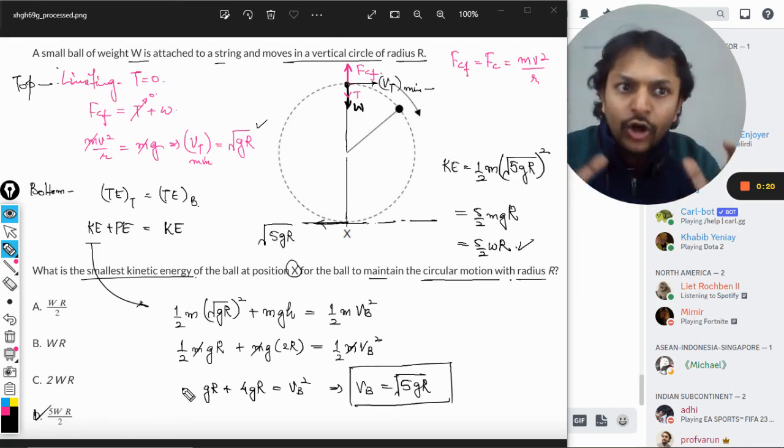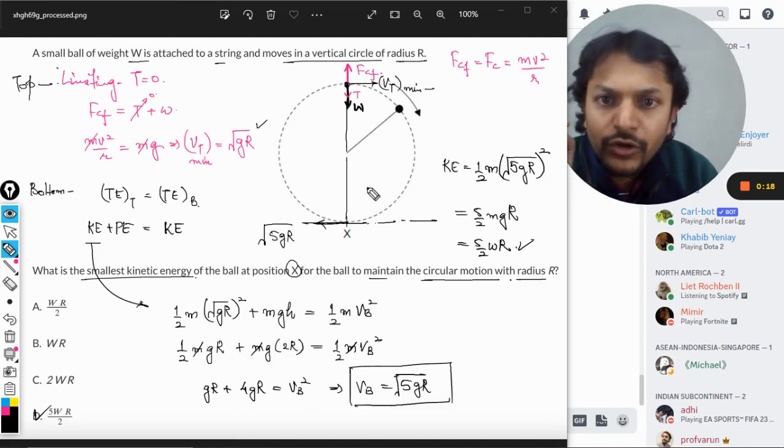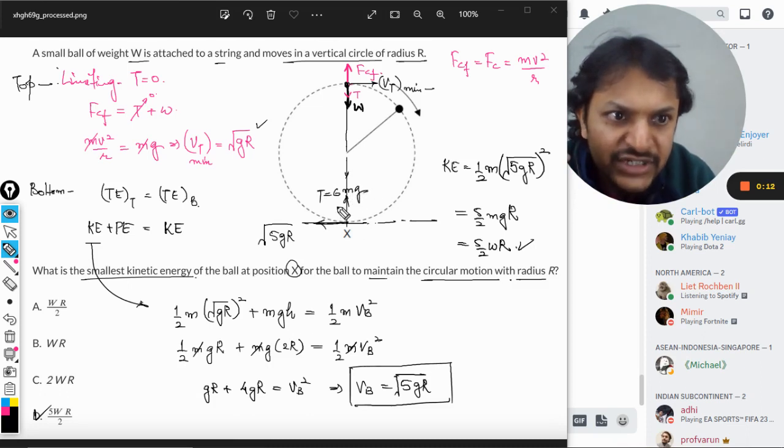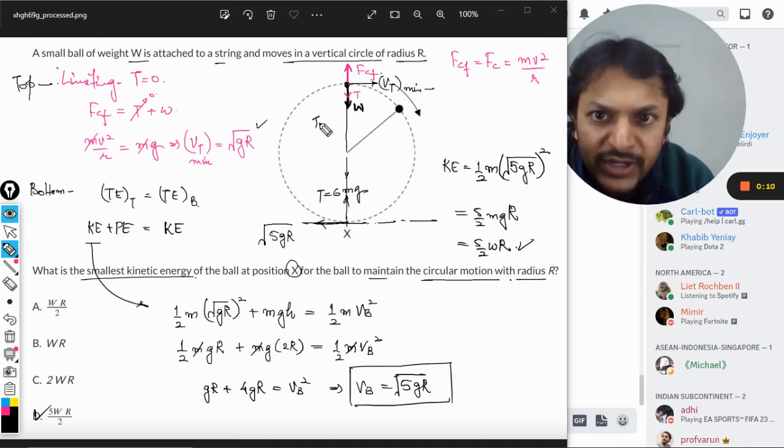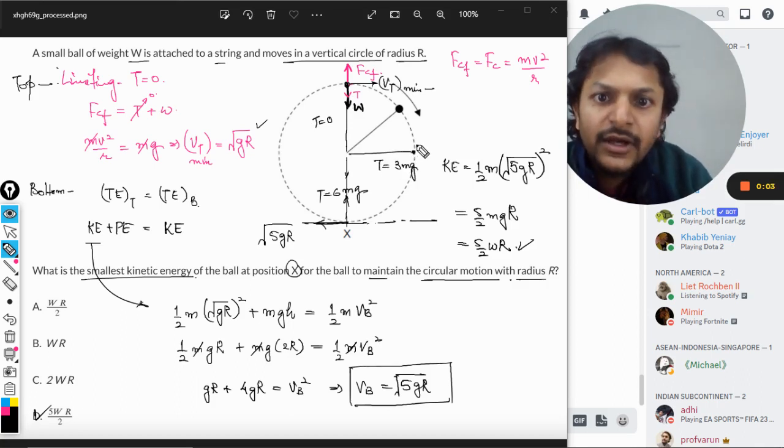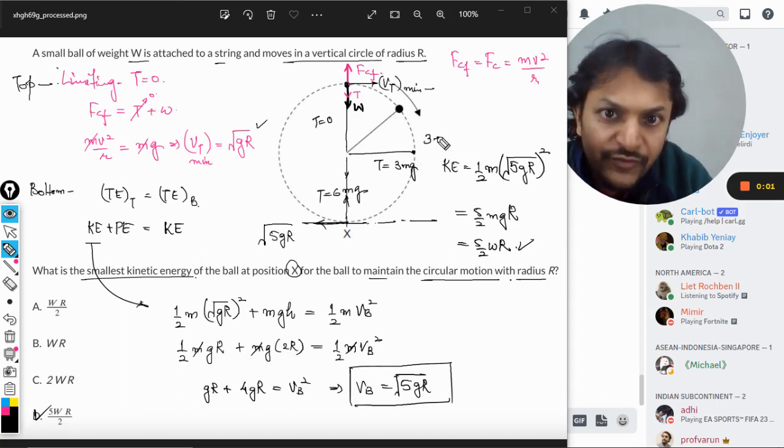My dear students, this is all but there is one more thing that I want to tell you. The tension in the string is maximum at the bottom which is equal to 6mg, and the tension at the top is equal to 0mg. At this point the tension becomes 3mg, and the velocity is root of 3gr.